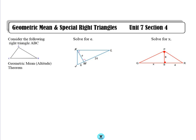The first thing we're going to look at is geometric mean. If I have a right triangle ABC and the right angle is at angle A, if I drop down an altitude from angle A and create another right triangle at point D, we create something called the geometric mean altitude theorem.